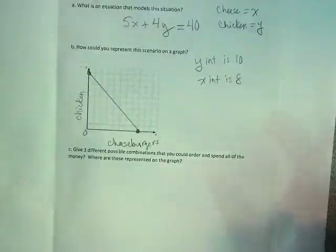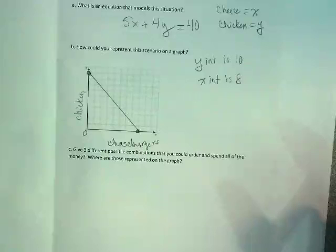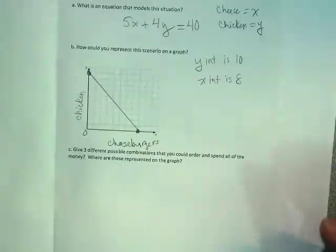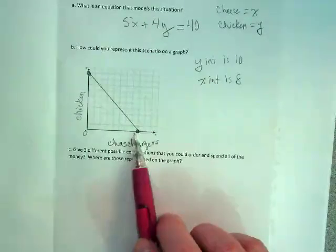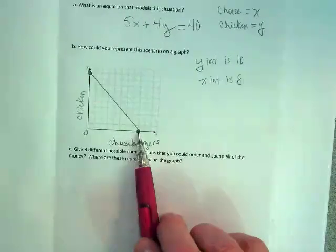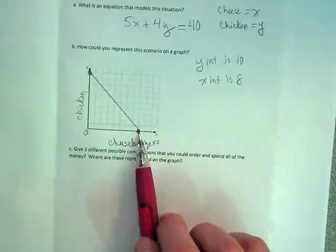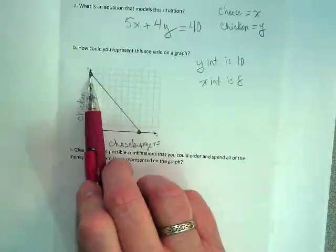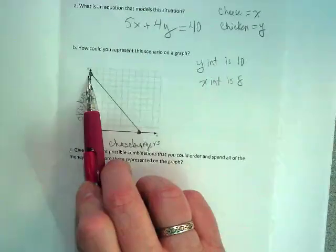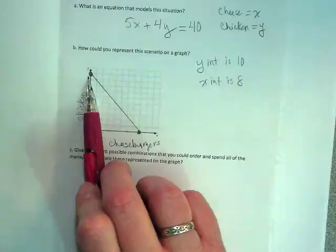So we haven't really used these very much, but I want you guys to just think along with me about what this means. If I'm buying this right here, what am I buying? Eight cheeseburgers. Am I getting any chicken burgers? And if I'm buying this instead, I'm getting what? Ten chicken burgers and how many cheeseburgers?